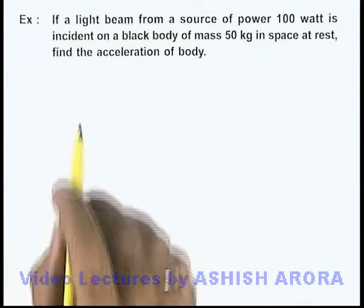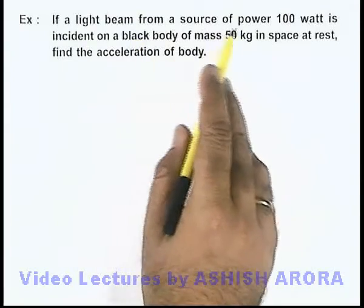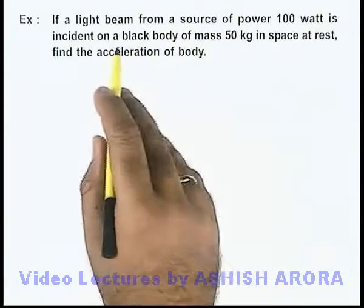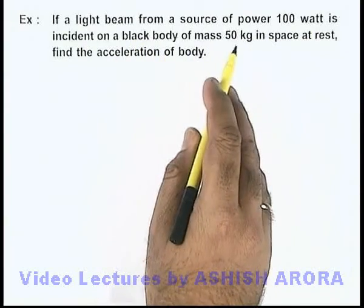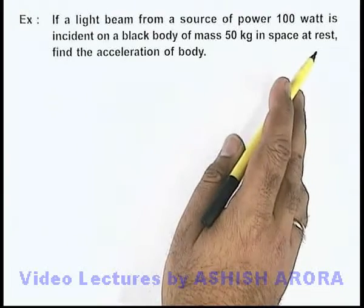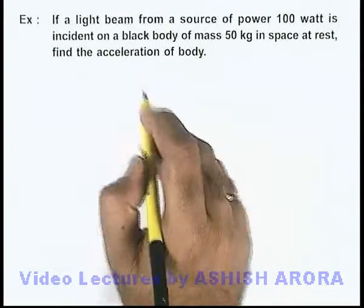In this example, we are given that if a light beam from a source of power 100 watts is incident on a black body of mass 50 kilograms in space at rest, we are required to find the acceleration of the body.